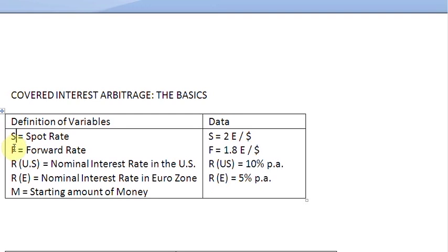S is our spot rate. F is our one period ahead forward rate. Then we have the nominal rate of interest in the US and the nominal interest rate in the Eurozone. We are going to assume M as the starting amount of money. The spot rate at the moment is 2 euros to a dollar. The forward rate one period ahead is going to be 1.8 euros to a dollar. The rate of interest in the US is 10% and the rate of interest in the Eurozone is 5%.